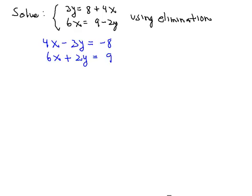Now in this case I think it might be easiest to eliminate the y terms because the coefficient of one of the y terms is negative and the other is positive. So let's multiply the first equation by 2 and the second equation by 3.